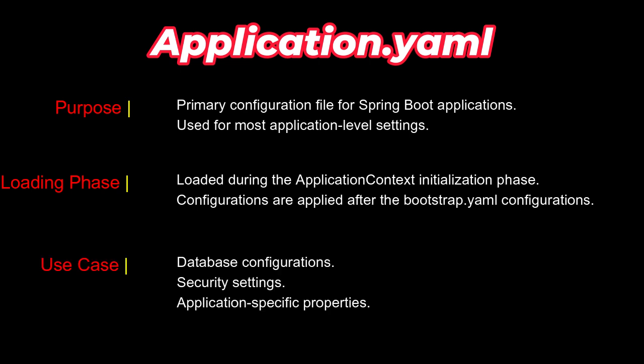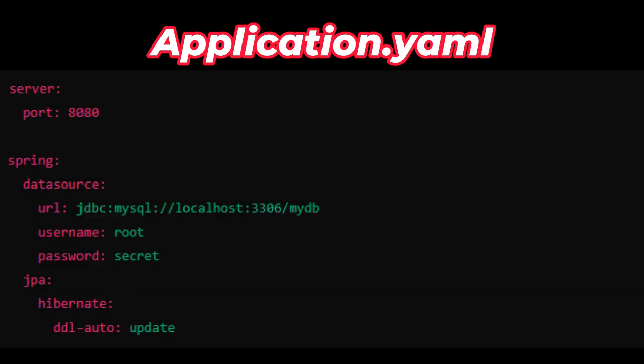As typical use cases, application.properties or application.yml can hold database configuration, security configuration, or application-specific properties like database settings, Kafka settings, and all those things which we need at the application level. This is an example of the application.yml.